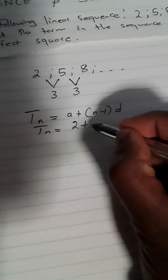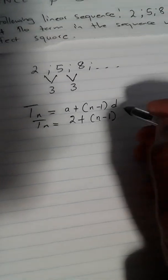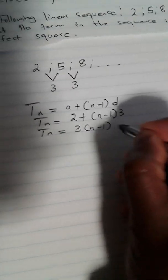Let's start by writing down this sequence and determine the general formula. We know it's 2, 5, 8, so the common difference is 3. The general formula is a + (n−1)d. Our first term a is 2 and d is 3, so we can write it as 3(n−1) + 2. This is the formula for the general term in this sequence.